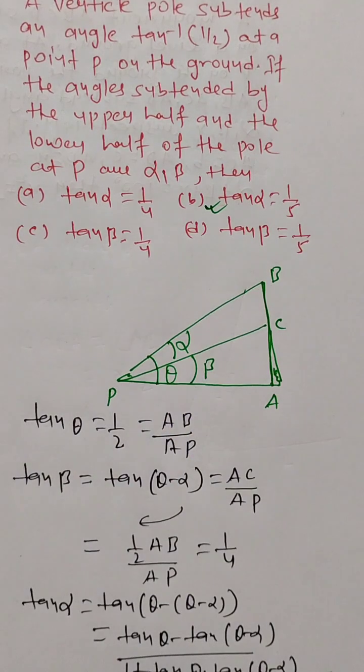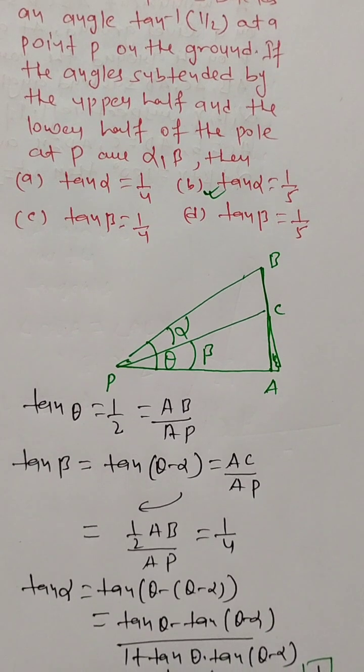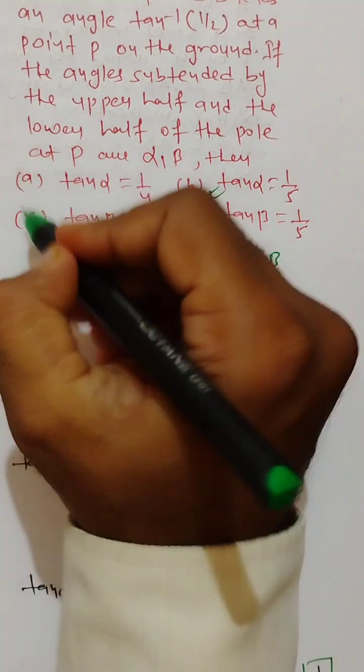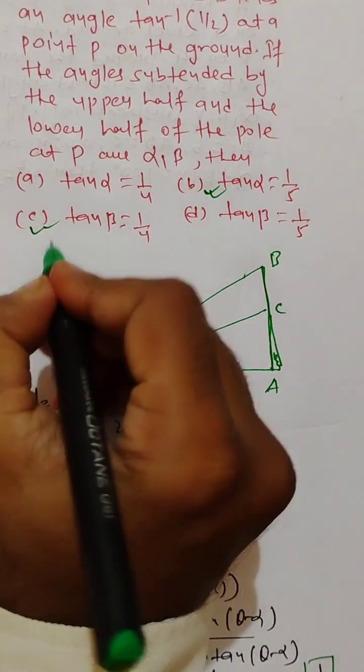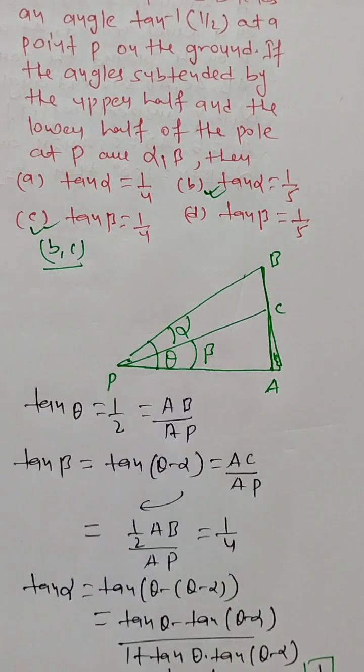And also we have tan beta equals 1 by 4, so this is the correct option. So we have B and C as correct options.